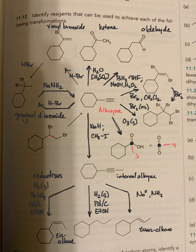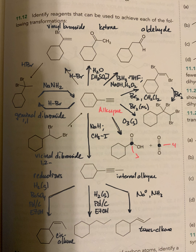One transformation that was missed: taking the vicinal dibromide back to the starting alkyne. Vicinal means a one-two relationship, compared to geminal which is one-one. To convert the vicinal dibromide to the alkyne, we treat with excess base — sodium amide — which does a series of E2 eliminations, first eliminating HBr and then a second HBr.